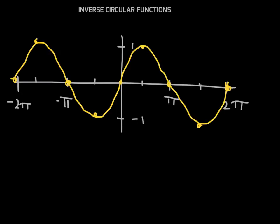Inverse Circular Functions, or Inverse Trigonometric Functions. To get started, let's begin with our basic sine graph. This is two periods worth. The main thing to realize is that this function fails the horizontal line test.